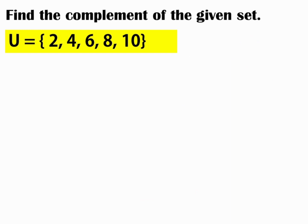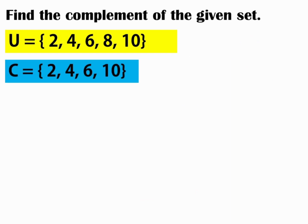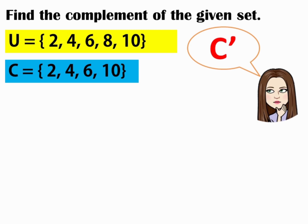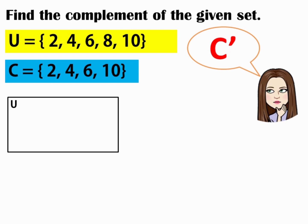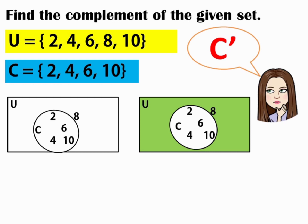Another one: if U is equal to 2, 4, 6, 8, 10 and C is equal to 2, 4, 6, 10, so what is C complement? Make a rectangle representation for the universal set. The elements of the universal set are 2, 4, 6, 8, 10. C is equal to 2, 4, 6, 10. The shaded region will be your final answer. So, the C complement is equal to 8.